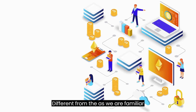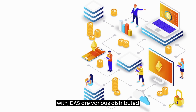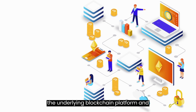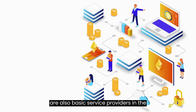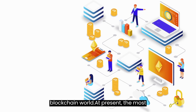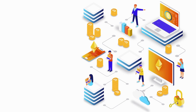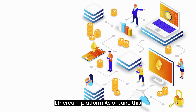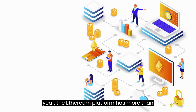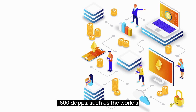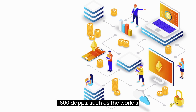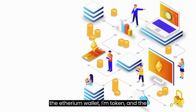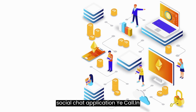Different from the apps we are familiar with, DApps are various distributed applications derived from the ecology of the underlying blockchain platform and are also basic service providers in the blockchain world. At present, the most prosperous DApp ecology is still the Ethereum platform. As of June this year, the Ethereum platform has more than 1,600 DApps, such as the world's first blockchain game CryptoKitties, the Ethereum wallet imToken, and the social chat application YeeCall.